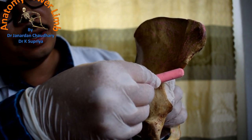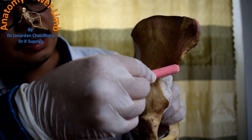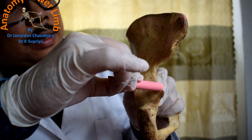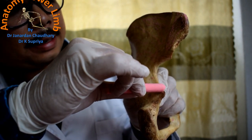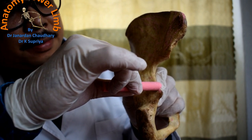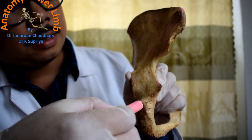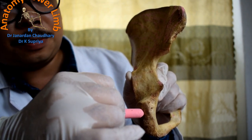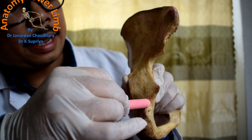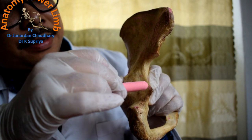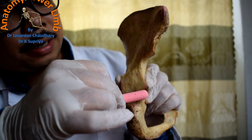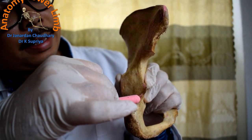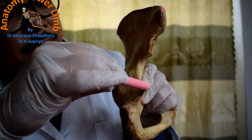The transverse acetabular ligament is continuous with the ligament of the pit of the head of the femur. The roof including the posterior inferior iliac spine gives origin to piriformis muscle. The lateral surface of the ischial spine gives origin to superior gemellus muscle, and the shallow groove just above the ischial tuberosity gives origin to inferior gemellus muscle.